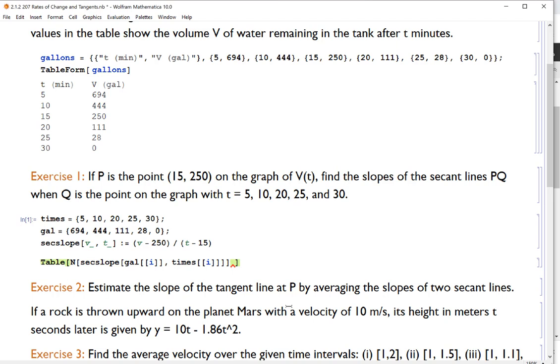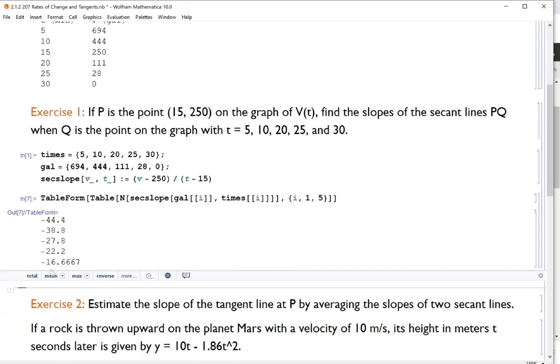What this will do is I can let I go from one to five. And it'll go through taking the first item of the gal list and the first item of the time list. And then the second item of the gal list, the second item of the time list. And one at a time, plug them into the secant slope formula, which is exactly what I want. And to make this look nice, I'm going to put a table form around my table. Shift enter. There they are. These are my secant slopes, starting with time equals five minutes all the way down to time equals 30 minutes.